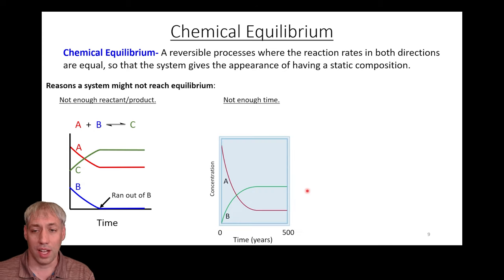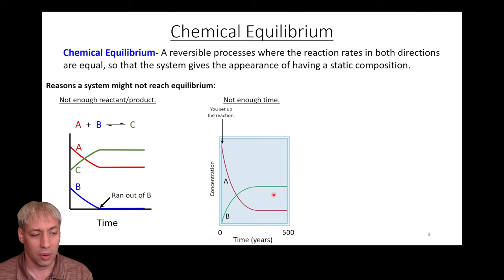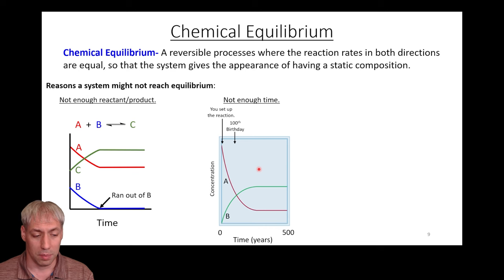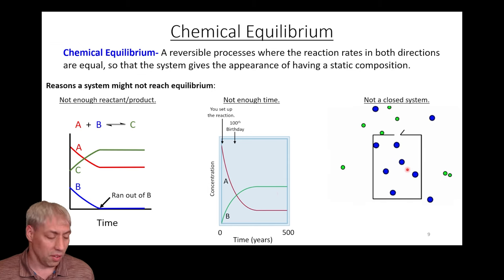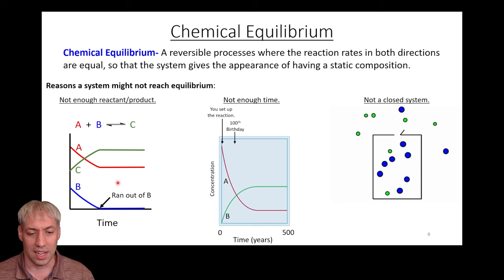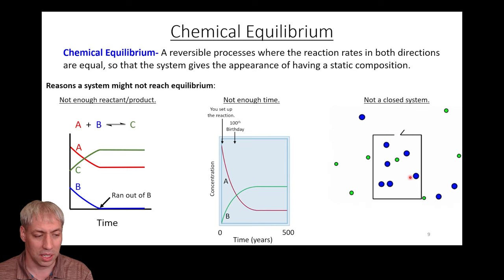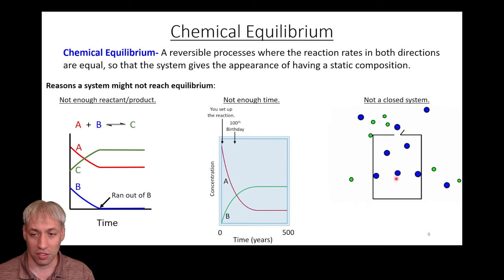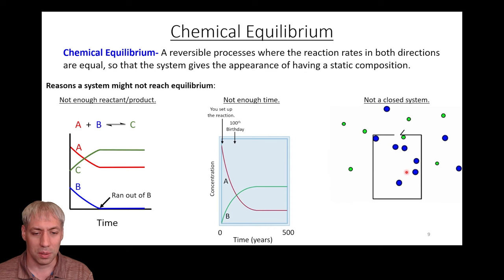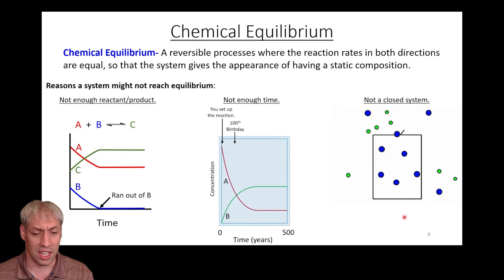Alternatively, if you don't give it enough time — and there are many reactions that take a very long time — you will never observe equilibrium. If you set up a reaction and your 100th birthday arrives before it gets there, unless you live to be 300, you'll never see it reach equilibrium. You could add a catalyst to make it go faster, but sometimes equilibrium is very slow to reach. Also, if it's not a closed system it completely breaks equilibria, because you're taking out reactants or products as the reaction happens — you're perturbing concentrations and not letting the system reach that equilibrium state.